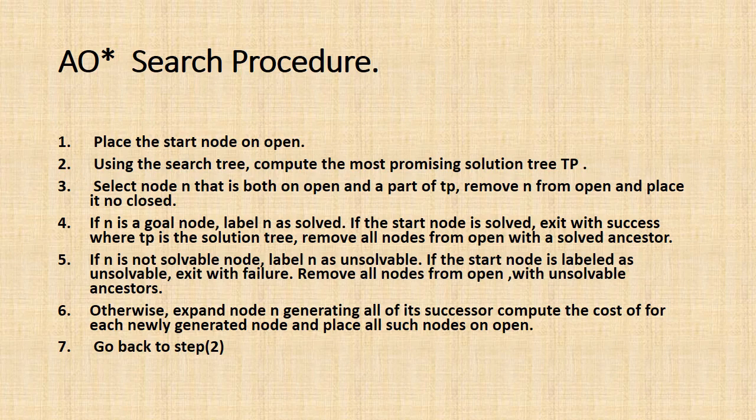AO* search procedure: Step 1, place the start node on open. Step 2, using the search tree, compute the most promising solution tree Tp. Step 3, select node n that is both on open and a part of Tp. Remove n from open and place it in closed. Step 4, if n is a goal node, label n as solved. If the start node is solved, exit with success where Tp is the solution tree. Remove all nodes from open with a solved ancestor.